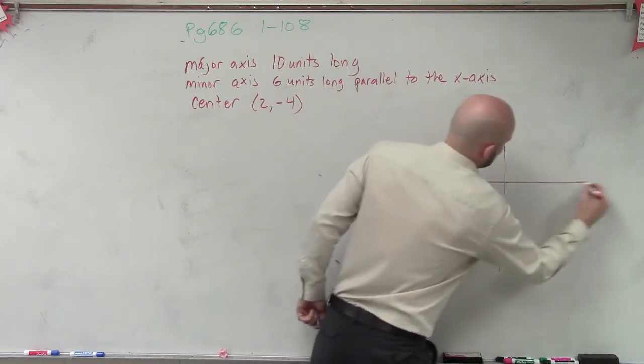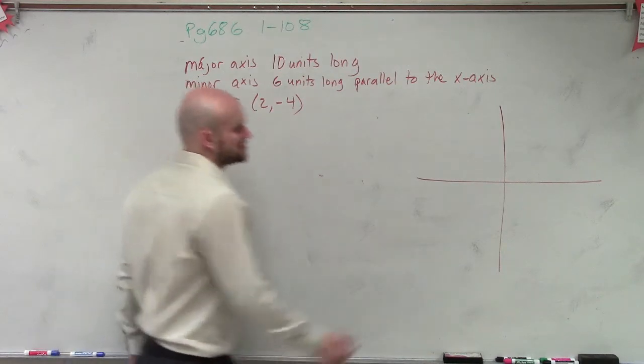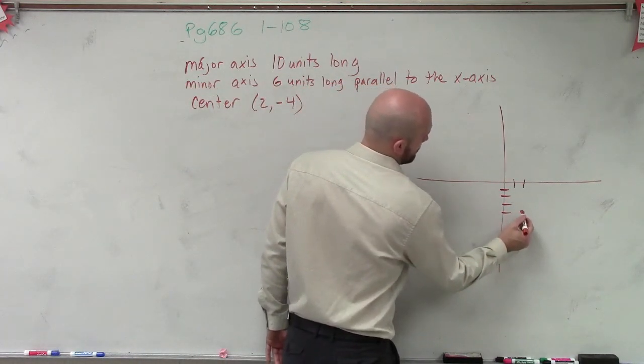So the only thing we're given, we're given values of a and b, but we don't know the points of a and b. But we are given the center, which is that 2 comma negative 4.